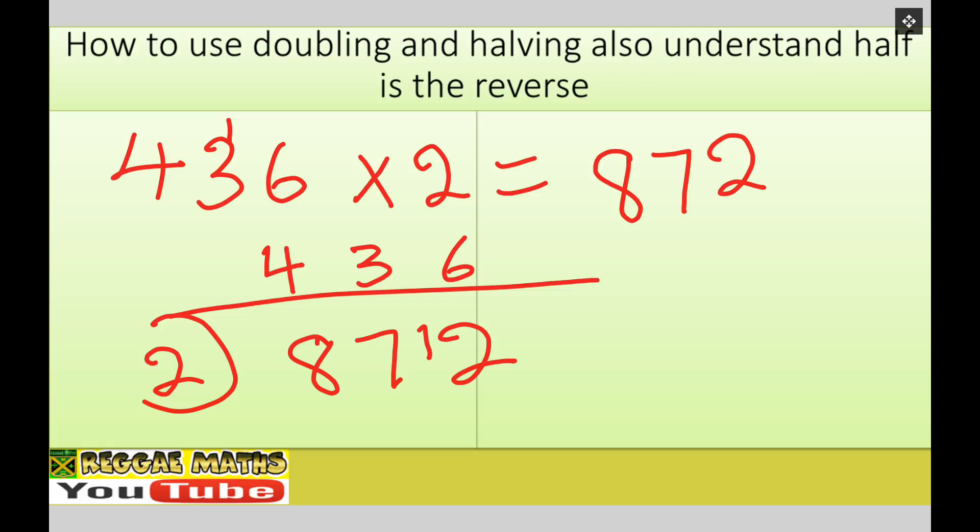So in summary, the opposite of times two, right, is divide by two. Okay, now basically, again, divide by two half, right. Right, doubling.